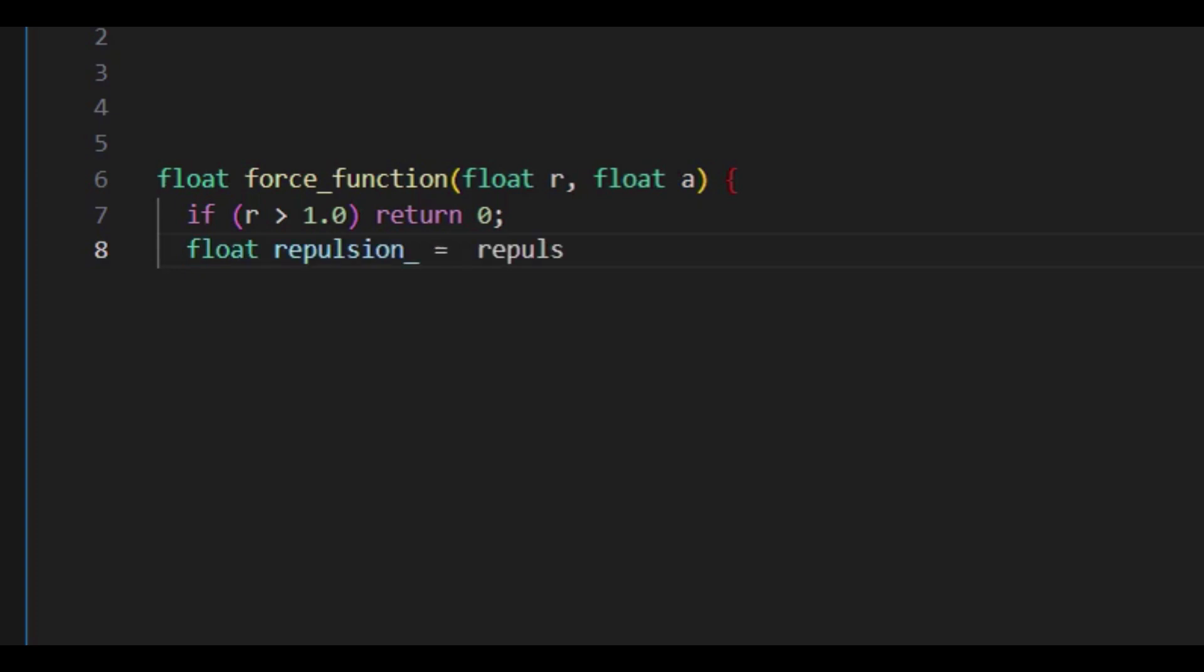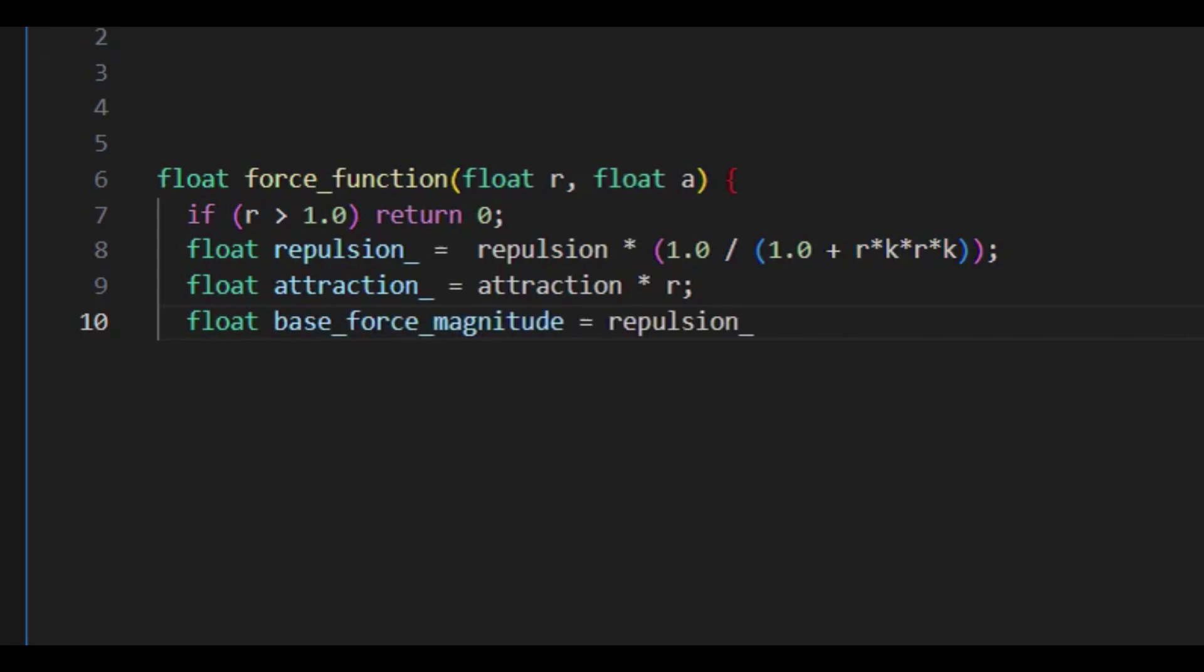This version has three parameters: attraction, repulsion, and k. Repulsion dominates up close, fading smoothly as distance increases. Attraction grows linearly. The result? A net force that's continuous and stable—no sudden jumps. And that means the motion of the particles becomes much more fluid, much more alive.